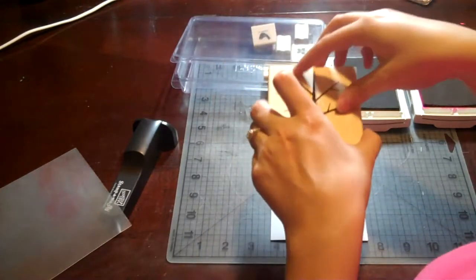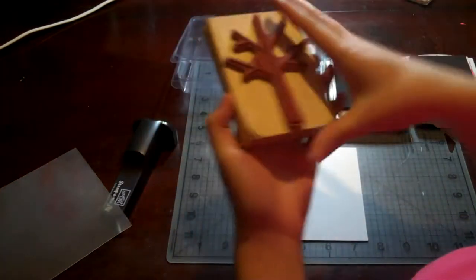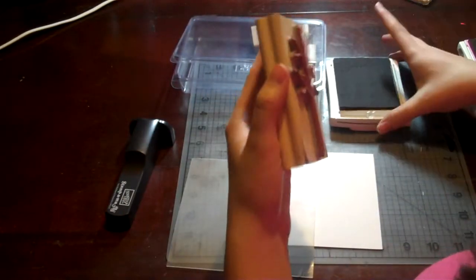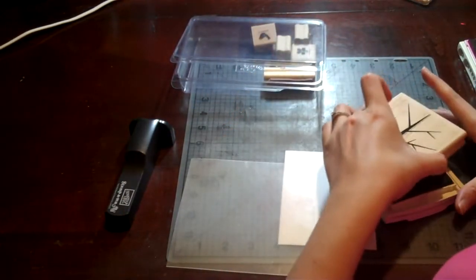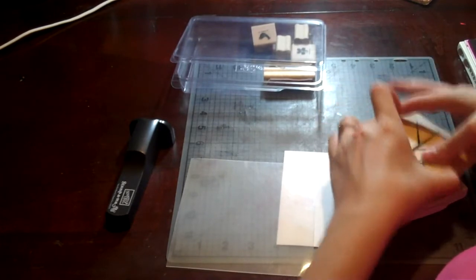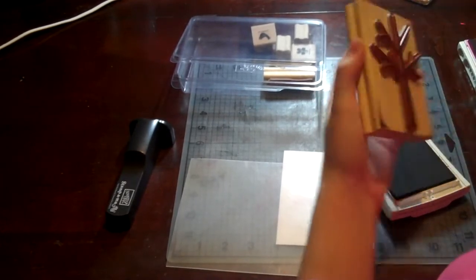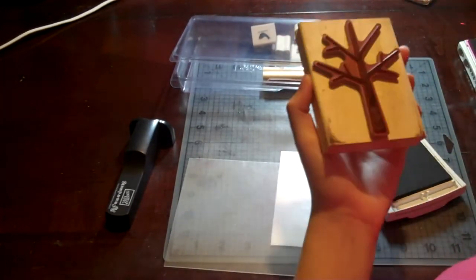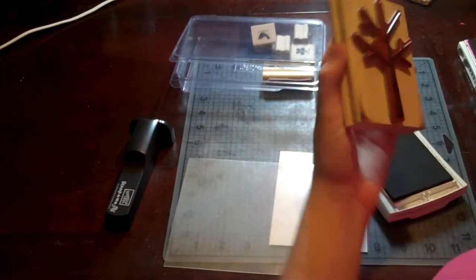For my tree, I'd like to stamp my tree perfectly. So I'm going to use the Stampamajig for my tree, too. When I ink up my stamps, I always dab like this, dab in different places until I get it pretty coated.